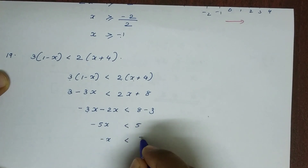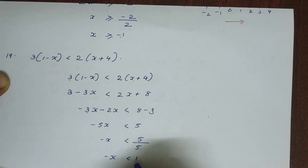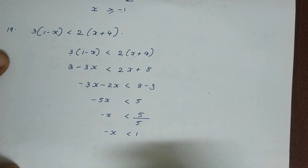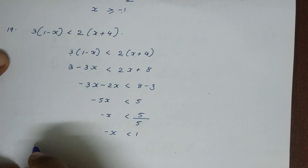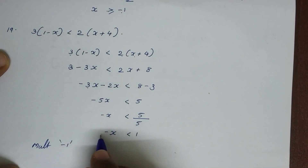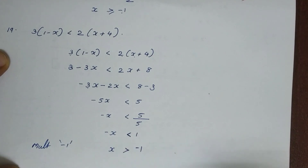So minus x is less than 5 divided by 5, which gives minus x is less than 1. Multiplying both sides by minus 1 reverses the inequality: x is greater than minus 1.